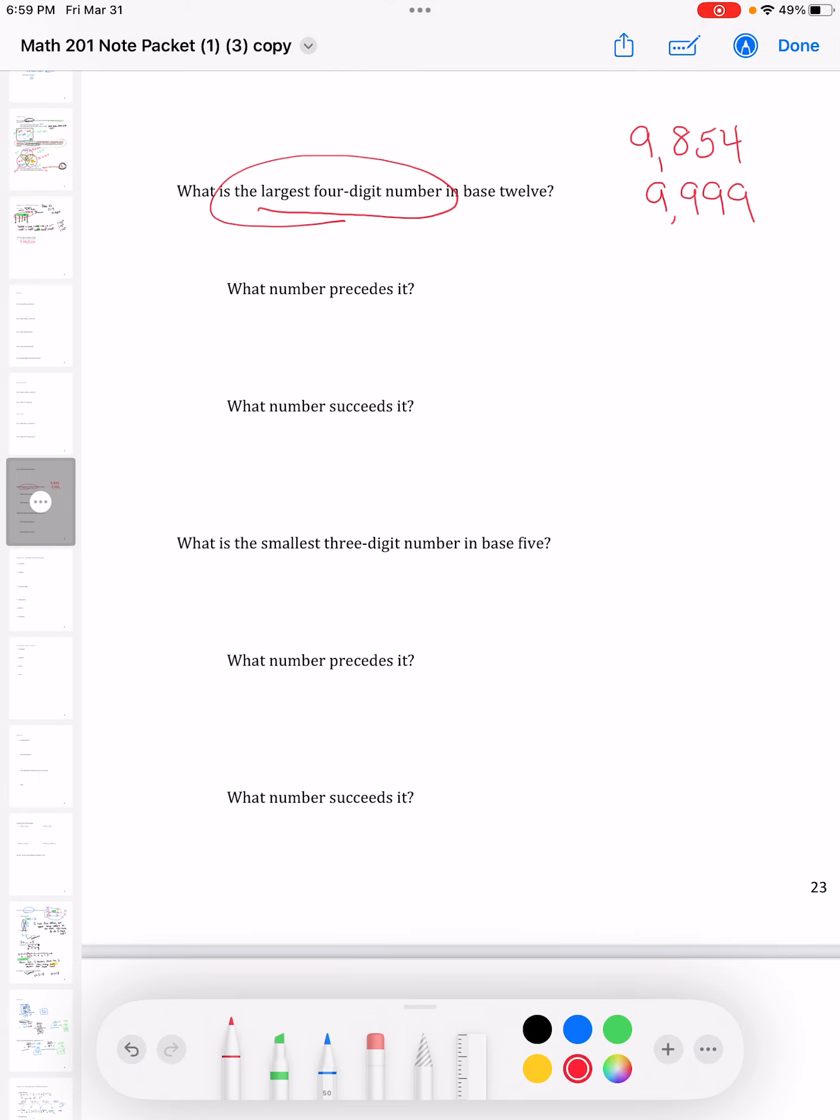Now let's think about this in base 12. Remember the largest single digit in base 12. Let's just write them out to remind everybody. T stands for 10 and E stands for 11. E is the largest single digit because after that I have one rod and zero ones, one rod and one one.